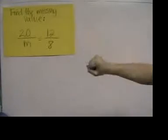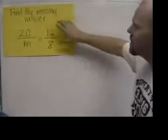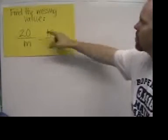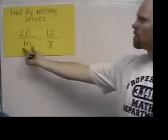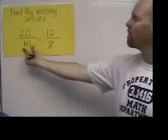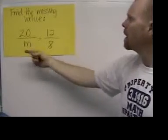Here's another proportion problem. In this case we've got these two equal ratios and we're supposed to find this missing value m.